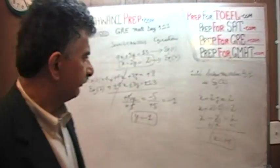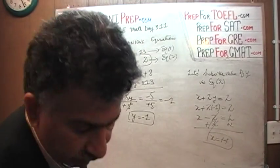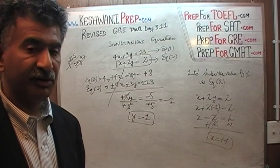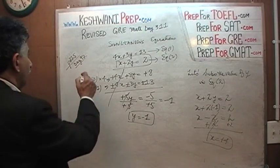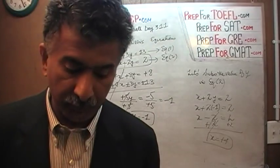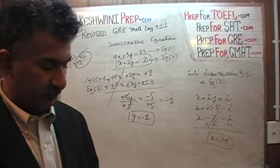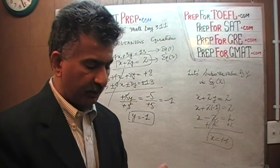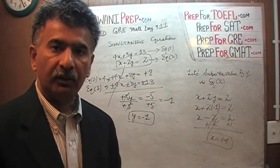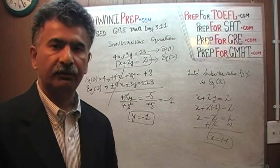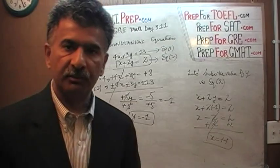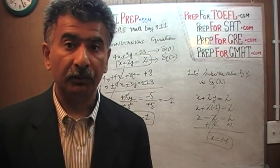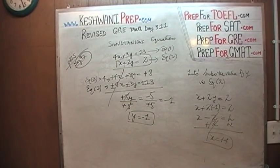That was it. Another method we could have used is the substitution method, which I'm not going to do here. If you're interested in the substitution method, you can watch the original day — day number 97 — where I have done both methods. The substitution method is where you solve for one variable and put it back in the second equation to solve for the other variable. I'll see you tomorrow. Bye now.